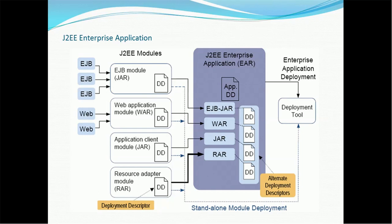Once we have the EAR file, we use either a command-line tool or the WebLogic console to deploy the EJB application. The source and deployment descriptor are provided by the developer to the WebLogic administrator. Using the deployment descriptor, we build the EAR file — on Windows or Linux/Unix as applicable. Once the EAR file is created, we use the WebLogic console or command-line tool to deploy the application.